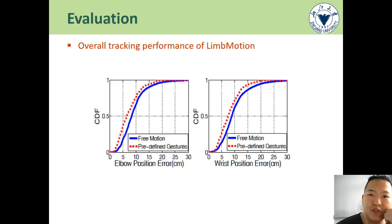These figures plot the tracking performance of LimbMotion. The free motion tracking median error is 8.2 cm and 8.9 cm for elbow and wrist. For the predefined gestures, we remove part of the point clouds that refer to uncommon arm postures, and the error decreased to 6.5 and 7.5 cm.